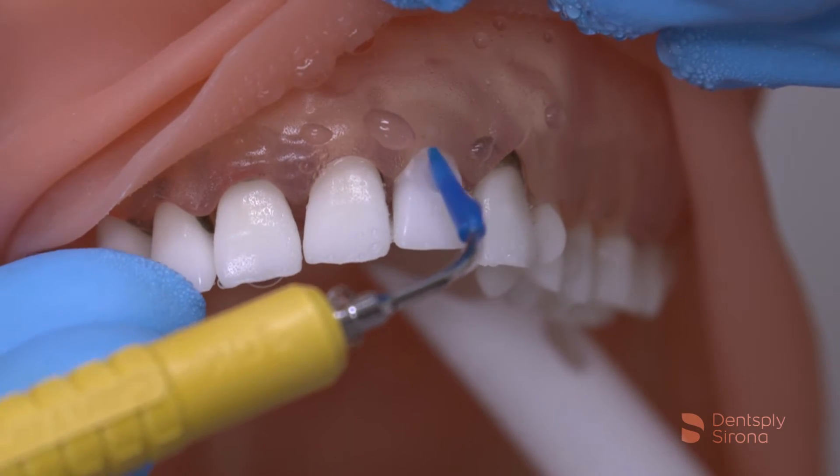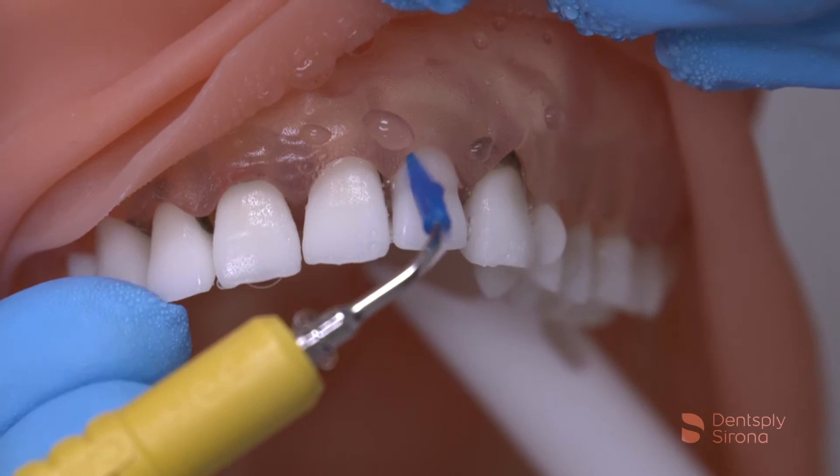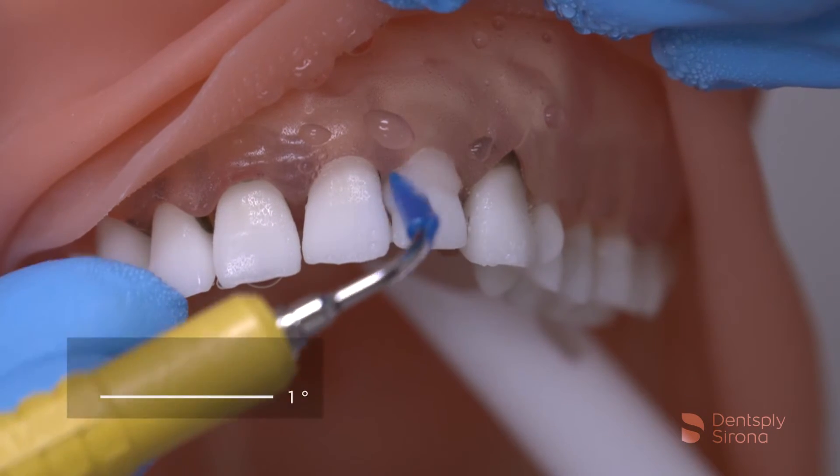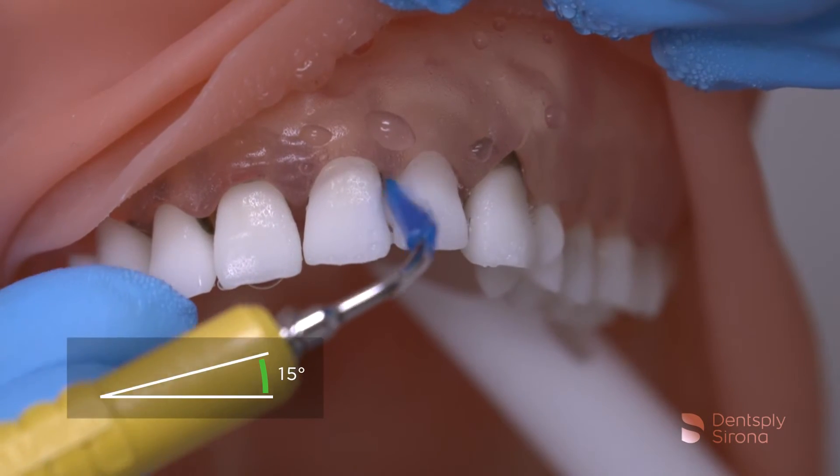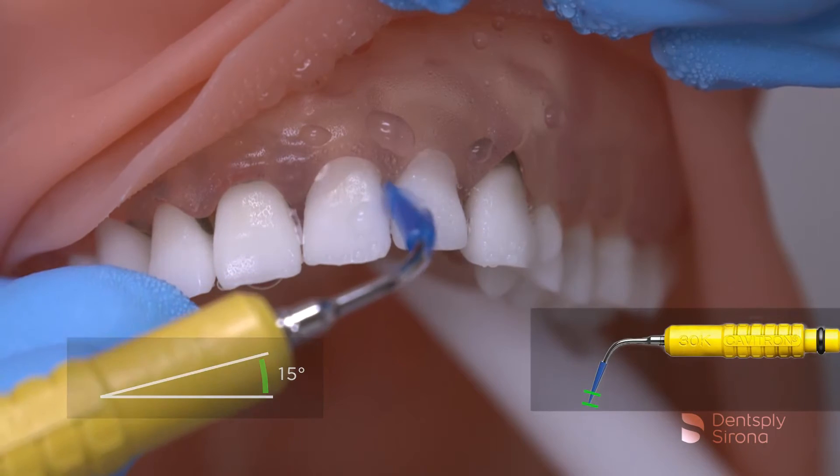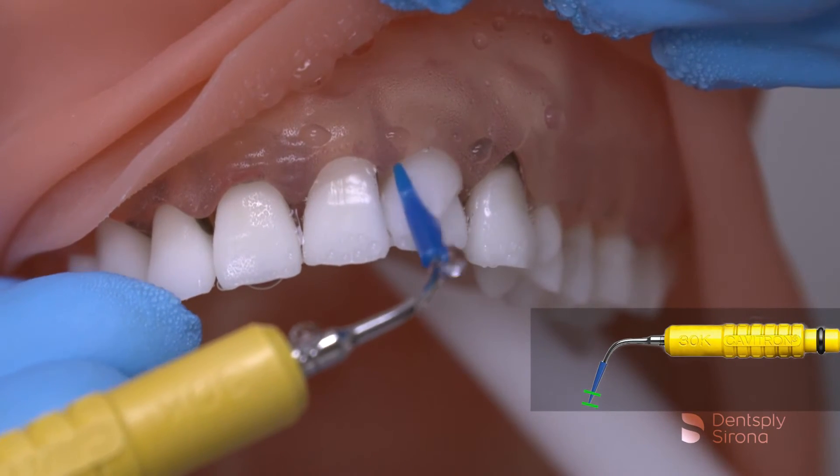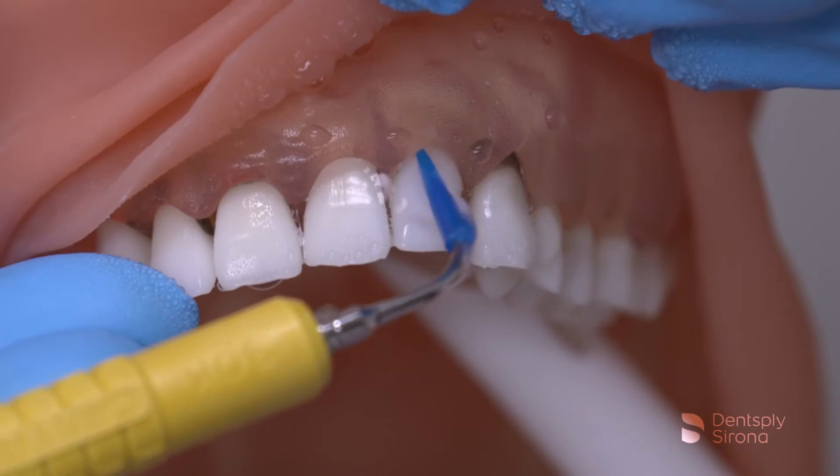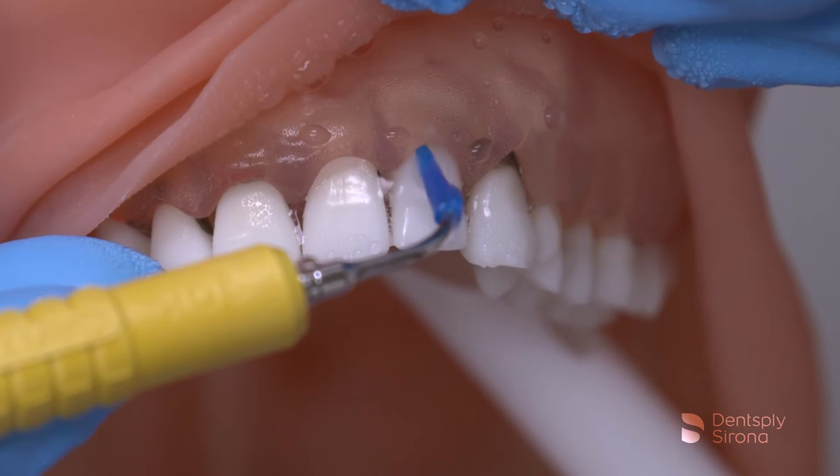The insert terminal end is placed slightly subgingively with a 0-15 degree angulation and 2-3 mm adaptation. Utilizing a 1-2 mm overlapping stroke will ensure thorough biofilm debridement.